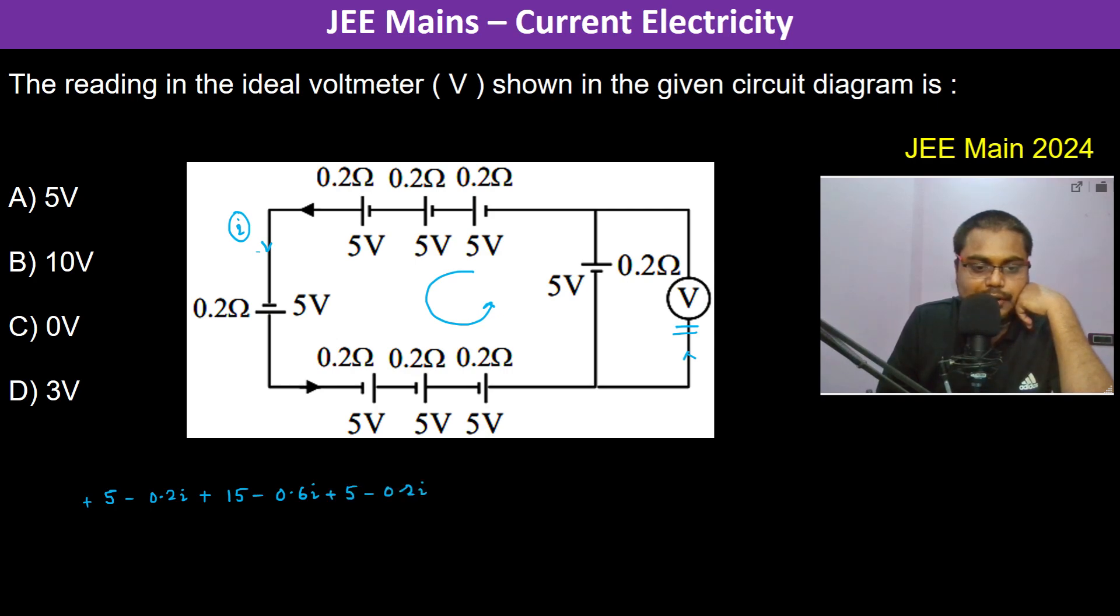So therefore i becomes 5, 15, it's 20, 25, that's 40, 40 divided by 0.2 plus 0.8, 1, 1.6, so this is 1.6 ampere which is 400 divided by 16, so 8, it's like 550 and it's 2, so therefore it's 25.